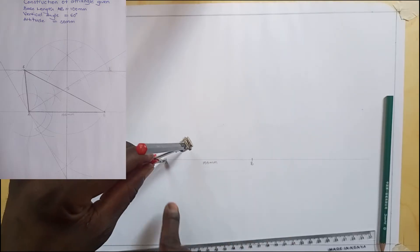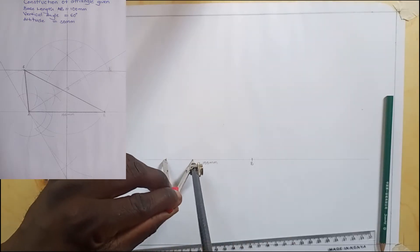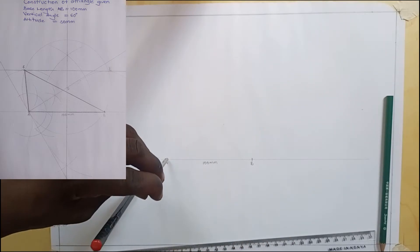At point A, I'm going to construct our vertical angle which is 60 degrees.